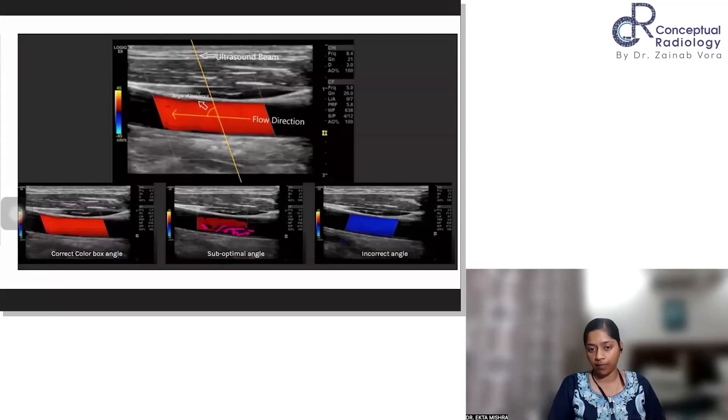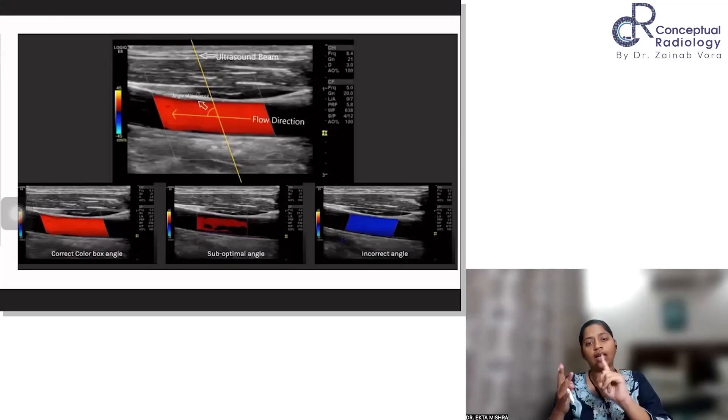If the angle is suboptimal, there is patchy loss of color. So when your color image is not good, the spectral will also be not good. So start optimizing your grayscale first, then the color Doppler imaging and followed by the spectral one. Then we can go for angle correction and everything.